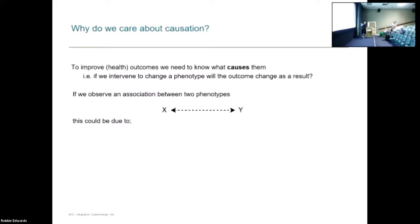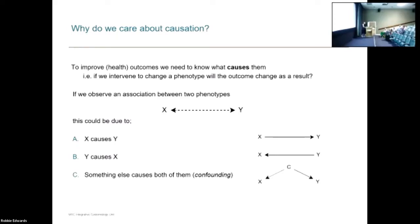If we observe an association between two phenotypes X and Y, this could be because X causes Y, but it could also be because Y causes X, or it could just be that there's something else causing both of those traits. Only if X causes Y would changing X actually change Y. For example, would lowering the population's BMI lead to a lower risk of a certain type of cancer? If they're just associated because it's driven by something else, then acting on BMI isn't going to cause any change in the outcome. This is a really fundamental question in public health and epidemiology.